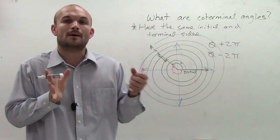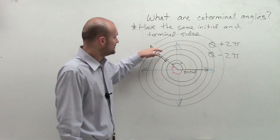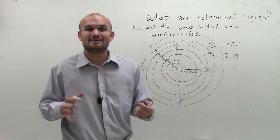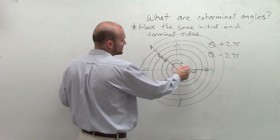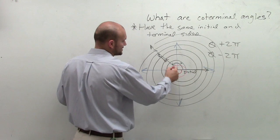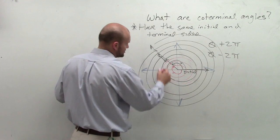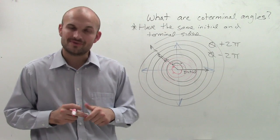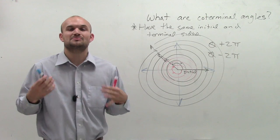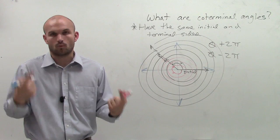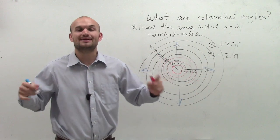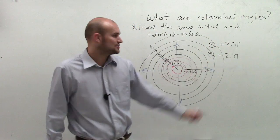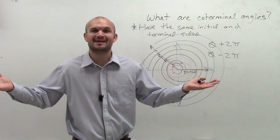If it asks you to find a positive and a negative coterminal angle, if you need to keep adding 2π until you get a positive, then that's what you need to do. You have infinitely many coterminal angles — you can subtract 2π again and again as well. That's why in the book we like to ask for just one positive and one negative, since there are infinitely many. To get that, you add or subtract 2π from your angle. That's coterminal angles.